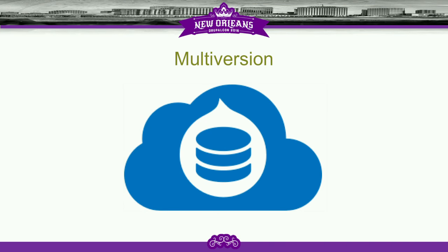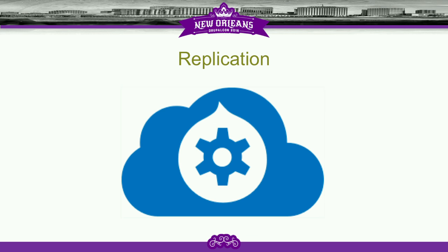We start with the multiversion module — the base module for our Contrib work. This makes everything revisionable: every content entity in Core and Contrib is changed by multiversion to be revisionable. It also adds a number of underlying storage changes. For example, deleting entities doesn't actually delete them anymore — it keeps them and archives them, which can be purged later. We've got a number of indexes that store information. Then we've got the replication module, which is underlying infrastructure for replication, allowing us to see what's changed between different workspaces.